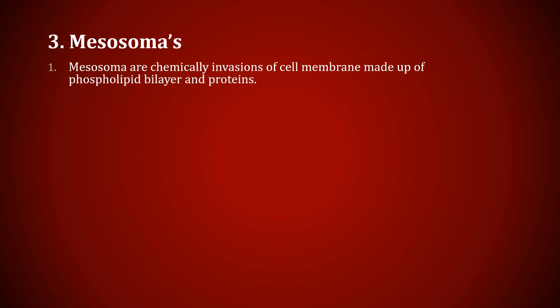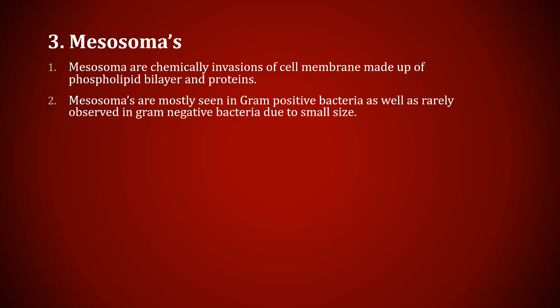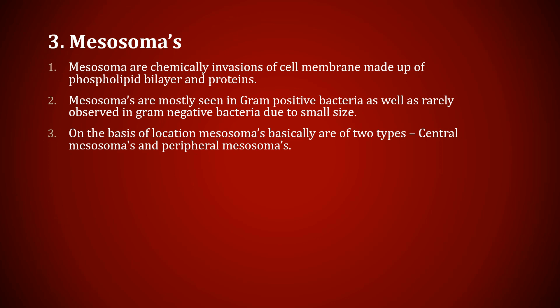The third one is mesosomes. Mesosomes are chemical invaginations of the cell membrane made up of a phospholipid bilayer and proteins. Mesosomes are mostly seen in gram positive bacteria and rarely observed in gram negative bacteria due to small size. On the basis of location, mesosomes are of two types: central mesosomes, present at the center of the cell, and peripheral mesosomes, present at the periphery. Important functions include: a role in septum formation at the time of cell division; providing a binding site for chromosome and plasmid at the time of replication; and increasing the internal surface area available for membrane activity.